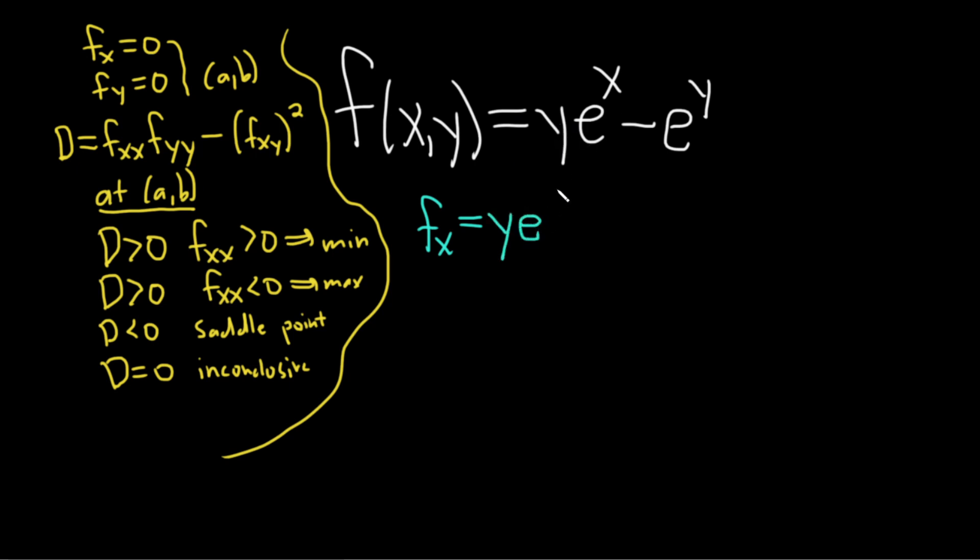The derivative of e to the x is e to the x. So the y hangs out and we just get ye^x. Since y is a constant, e to the y is also a constant, so its derivative is zero. We set this equal to zero, and right away we can see we do have a solution. e^x can never be zero, so that means that y must be equal to zero.